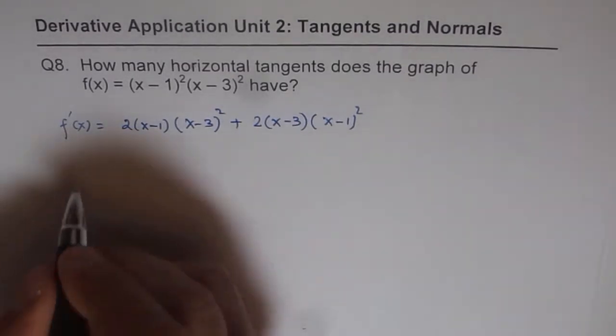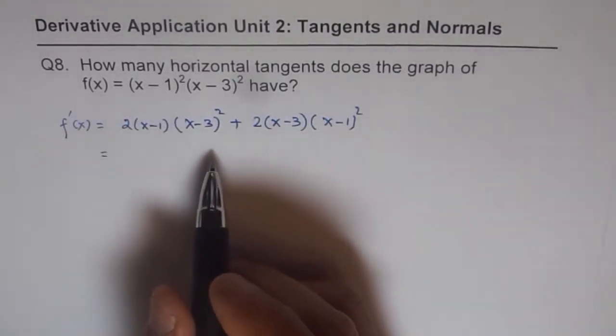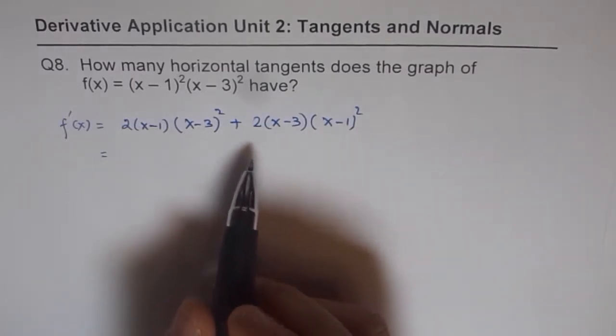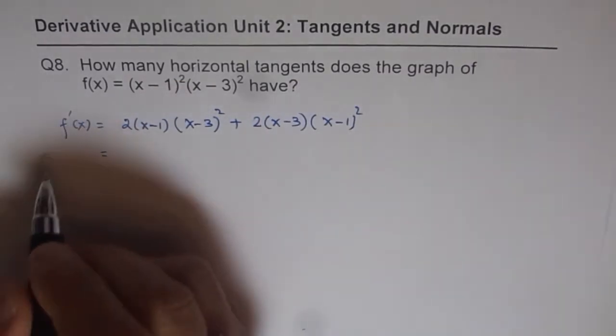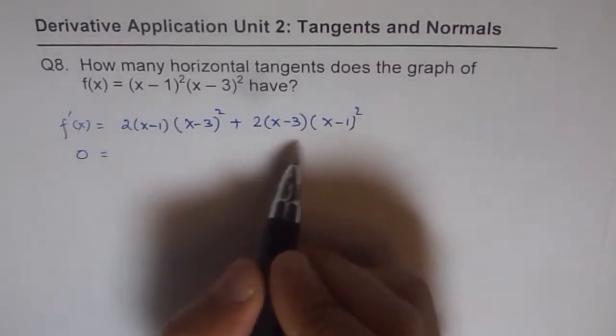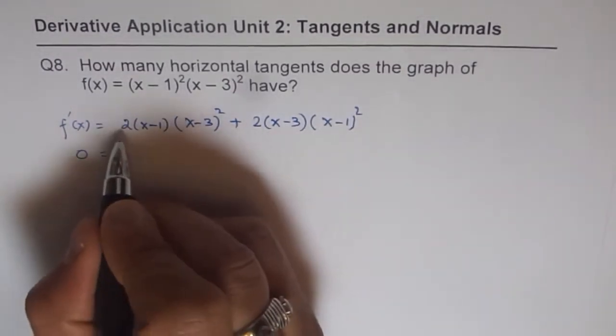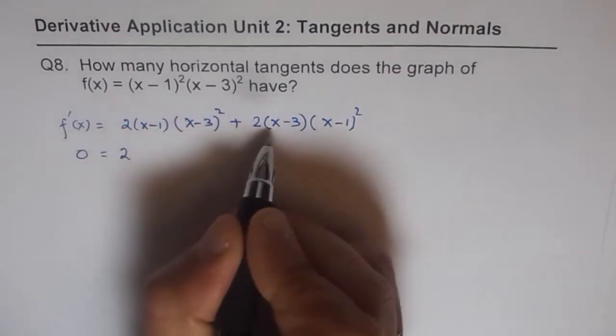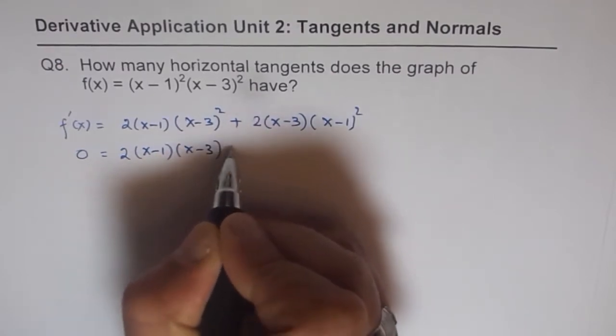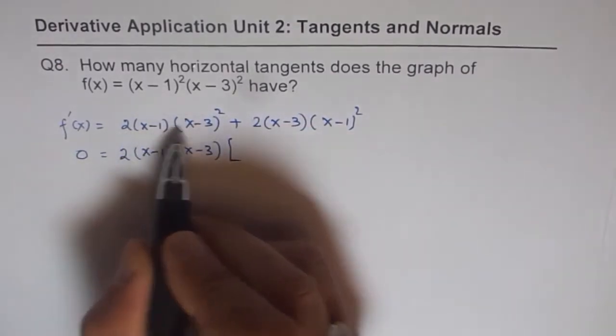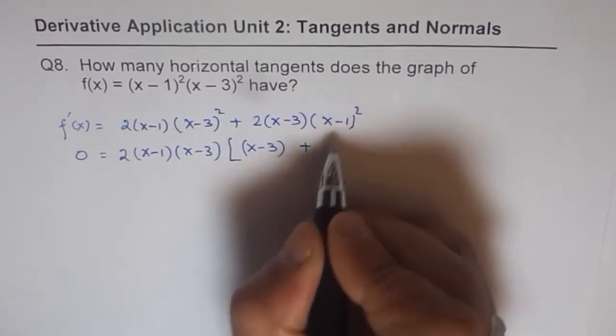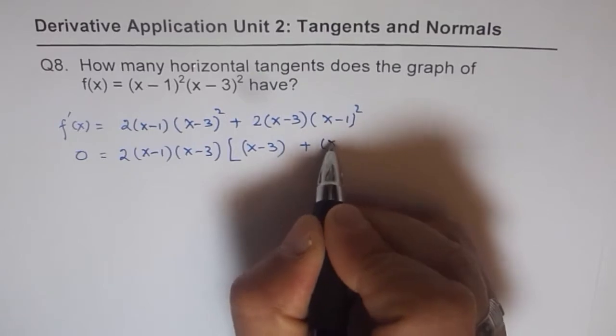Now, we can simplify this. It's better to keep it in factored form, so don't really expand and simplify. Since we want horizontal tangents, our f'(x) is equal to 0. That is what we're trying to find out. So, it's better to keep it in this form, which is factored form. Let's factor it further. We have 2(x-1) is common and we also have (x-3) common. So, we'll take them and we're left with (x-3) from the first term and the next term we are left with (x-1).